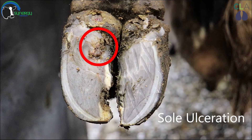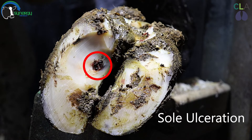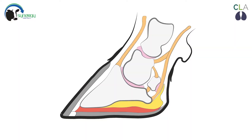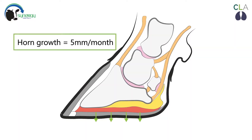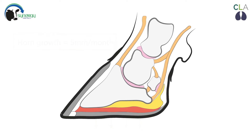Here are some photos of sole ulcers. As sole horn grows at a rate of 5mm per month, sole bruising and ulceration is often not seen for a few months after the initial trauma.